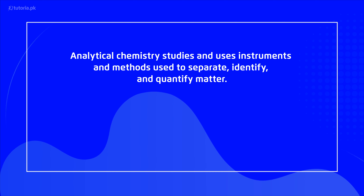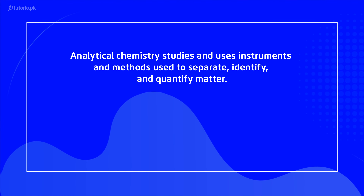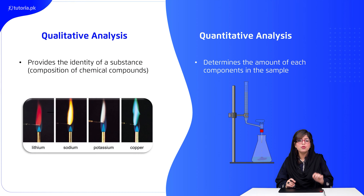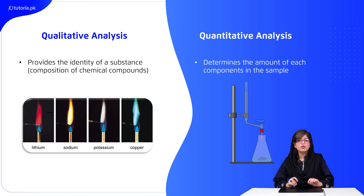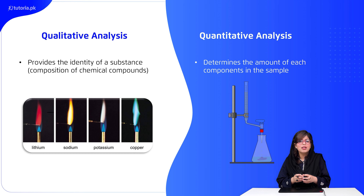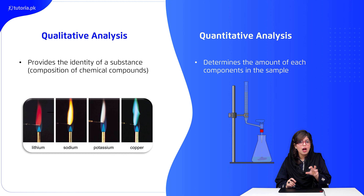Students، یاد رکھیں کہ chemistry سے related جو experimental techniques ہوتی ہیں انہیں ایک special branch of chemistry cover کرتی ہے جسے ہم analytical chemistry کہتے ہیں۔ یہ جو analytical chemistry ہوتی ہے یہ practical form of chemistry ہوتی ہے جس کے اندر ہم مختلف طرح کے analysis دیکھتے ہیں — کہ آپ کیسے کوئی بھی element یا compound اپنے desired substance میں detect کر سکتے ہیں اور کتنی quantity میں کوئی بھی reactant یا product present ہے۔